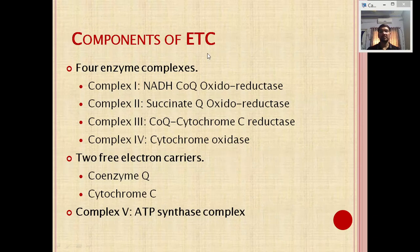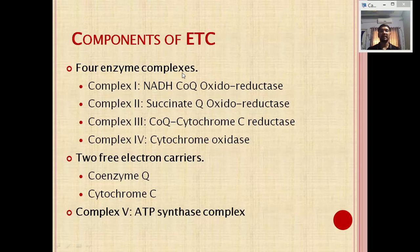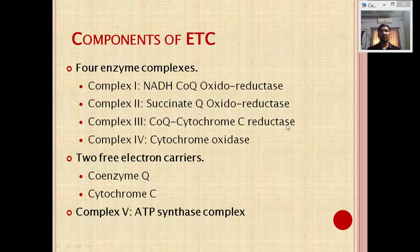Components of the electron transport chain: mainly four complexes are involved, known as four enzyme complexes, embedded in the inner mitochondrial membrane — Complex 1, 2, 3, and 4. They are fixed complexes, not mobile. Complex 1 is NADH coenzyme Q oxidoreductase; Complex 2 is succinate coenzyme Q oxidoreductase; Complex 3 is coenzyme Q–cytochrome C oxidoreductase; Complex 4 is cytochrome oxidase.